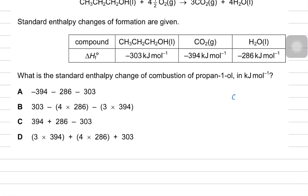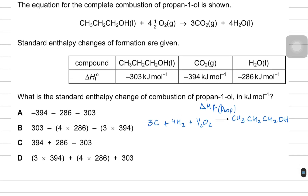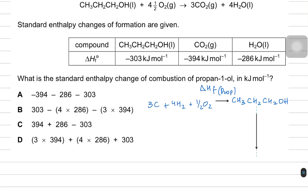To make propanol (CH3CH2CH2OH) from elements you use 3 moles of carbon, 4 moles of hydrogen, and half a mole of oxygen — that is the formation of propanol. Then combusting it produces carbon dioxide and water; the balancing gives 3 moles of carbon dioxide and 4 moles of water — that is the combustion of propanol.